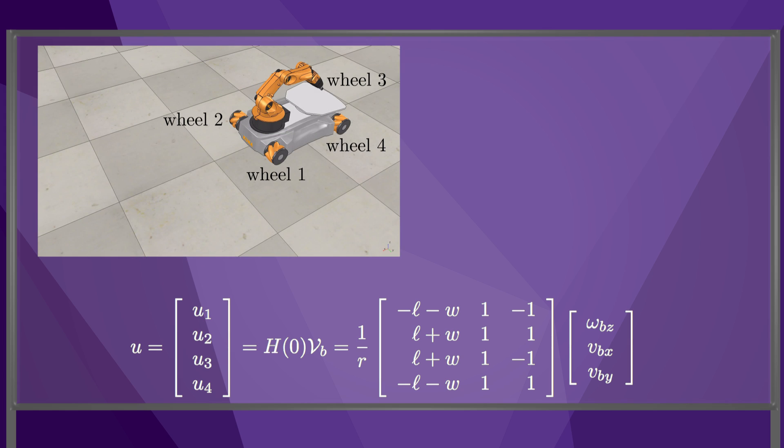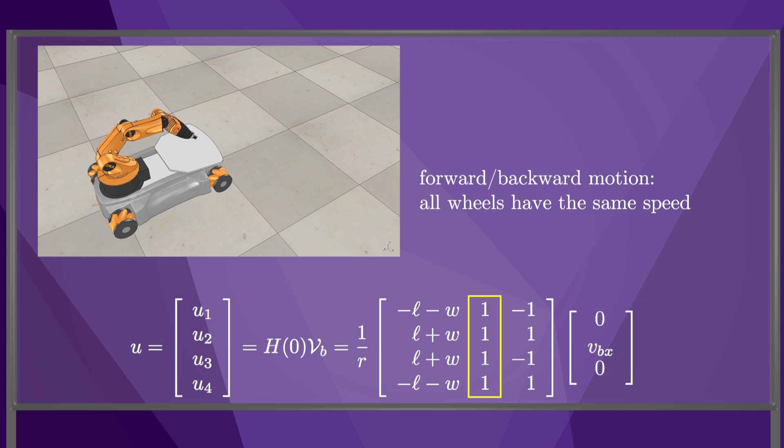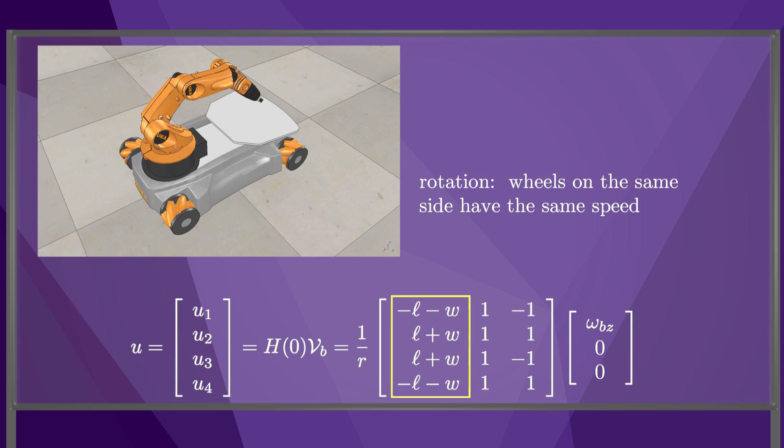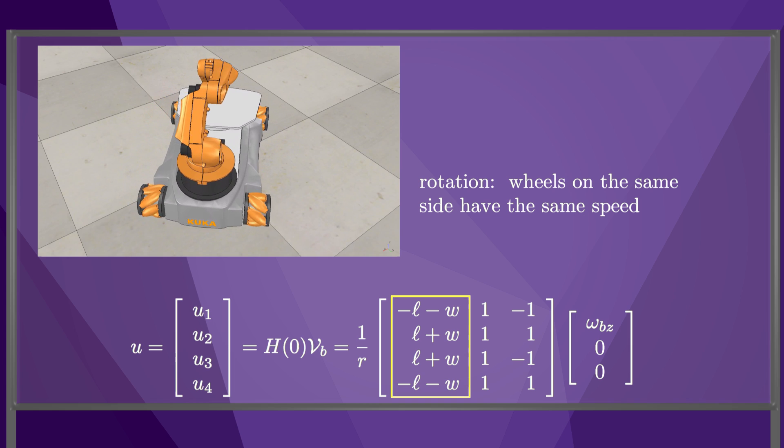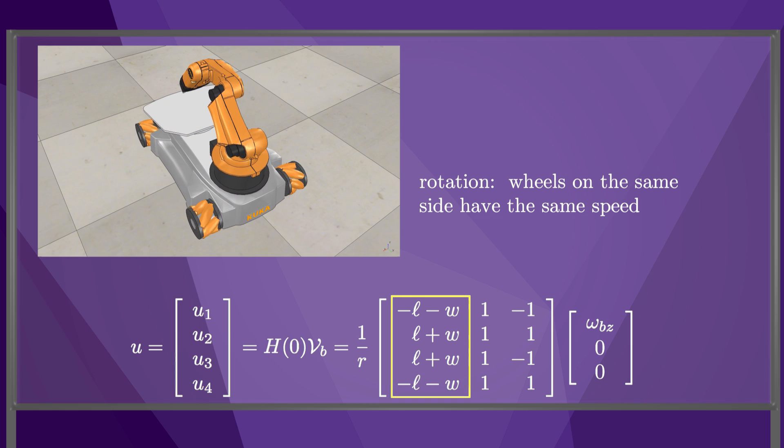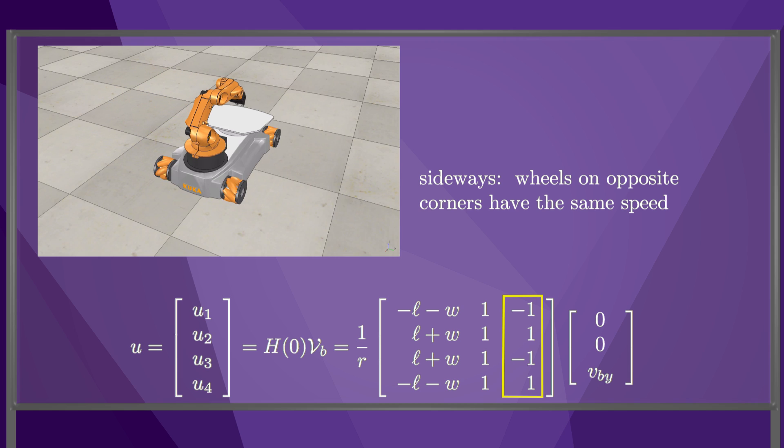Let's use the H matrix to drive a robot with four mecanum wheels. The H matrix tells us that forward-backward motion in the body x direction requires all wheels to have the same speed, as shown in this animation. If the desired motion is a pure rotation in the body frame, the wheels on the same side should have the same speed. If the desired motion is sideways, in the body y direction, then wheels on opposite corners should have the same speed.